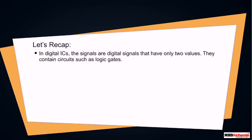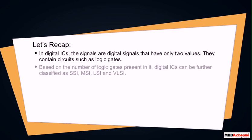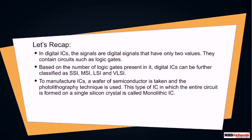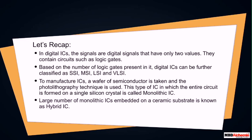Digital ICs contain circuits such as logic gates. Based on the number of logic gates present, digital ICs can be further classified as SSI, MSI, LSI, and VLSI. To manufacture ICs, a wafer of semiconductor is taken and the photolithography technique is used. The type of IC in which the entire circuit is formed on a single silicon crystal is called a monolithic IC. A large number of monolithic ICs embedded on a ceramic substrate is known as a hybrid IC.